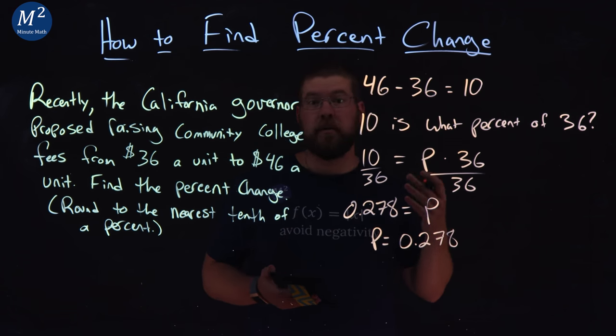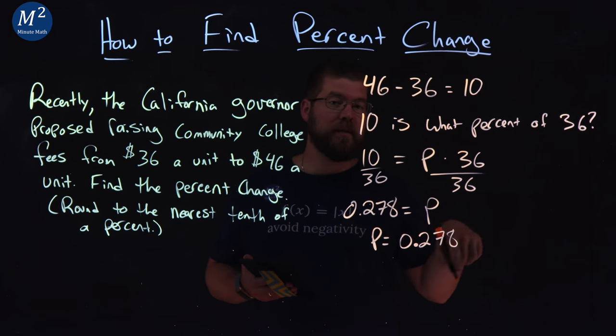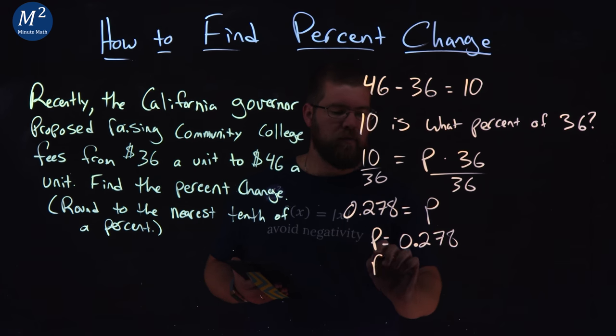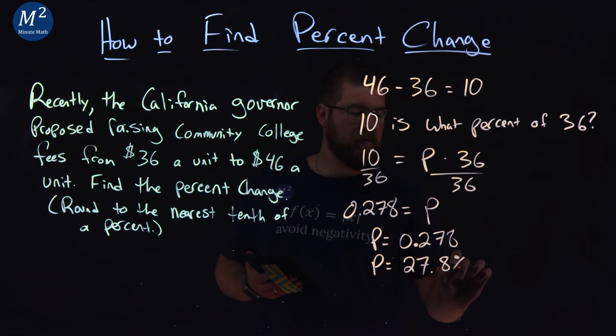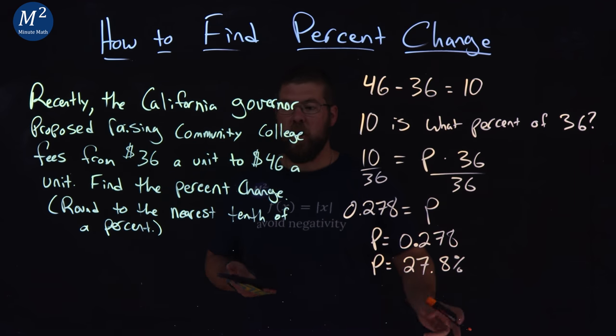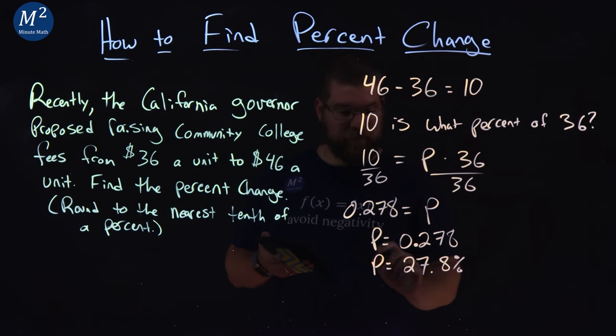But now, we want to write that as a percent. To write as a percent, we move the decimal place two spots to the right, multiply it by 100. So, P is equal to 27.8%. And is that already rounded to the nearest tenth of a percent? Yes, it is.